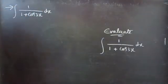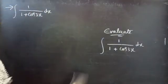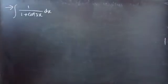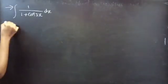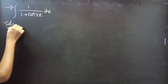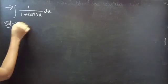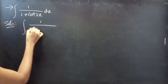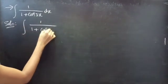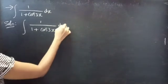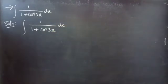Evaluate: integral of 1 divided by (1 plus cos 3x) dx. Solution: we have integral 1 by (1 plus cos 3x) dx.